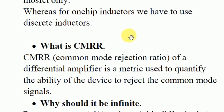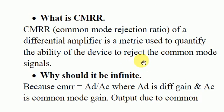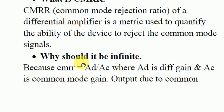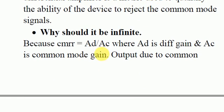The next question was about CMRR. CMRR — Common Mode Rejection Ratio — is the property of a differential amplifier used to quantify the ability of the device to reject common mode signals. If the noise is the same on both inputs, the output should be zero.